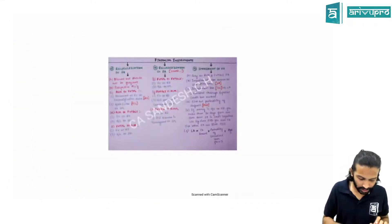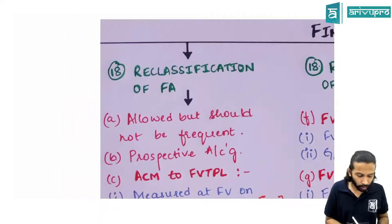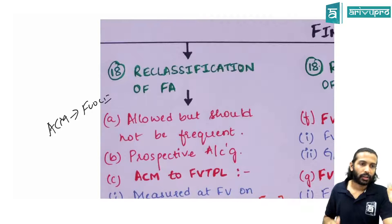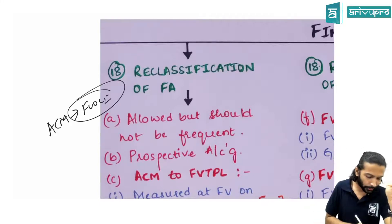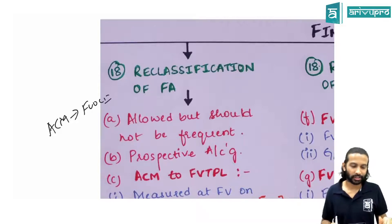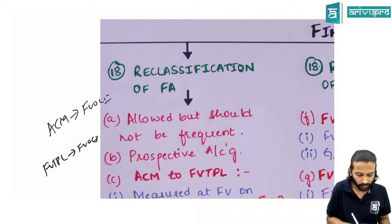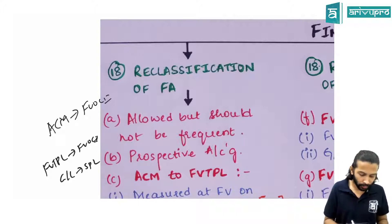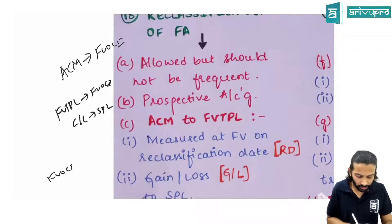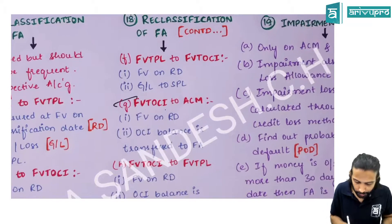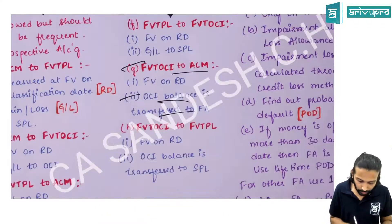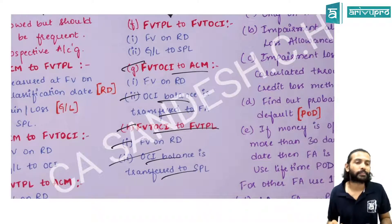Reclassification of financial assets: six combinations exist between ACM, FVTOCI, and FVTPL. The thumb rule is to use fair value and direct gain or loss to the category being moved into. Exception: moving from FVTPL to FVTOCI — gain/loss still goes to P&L. Moving out of FVTOCI to ACM — OCI balance is transferred to the financial asset itself. Moving from FVTOCI to FVTPL — OCI balance is transferred to P&L.